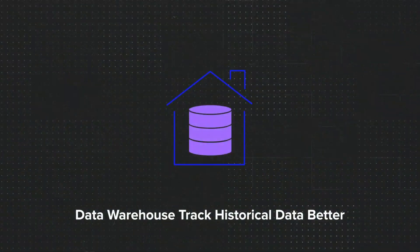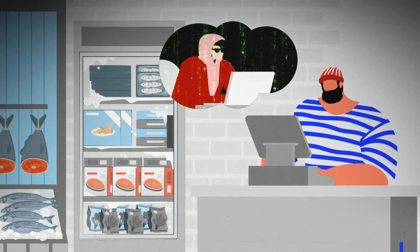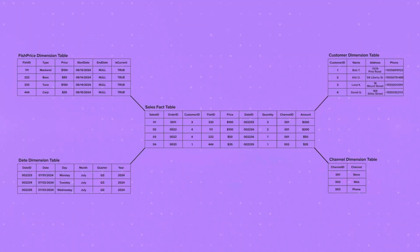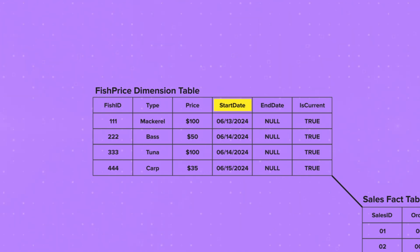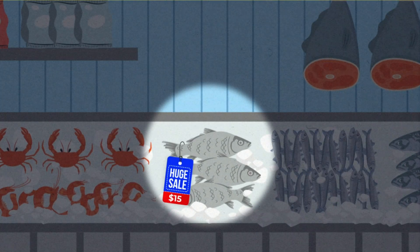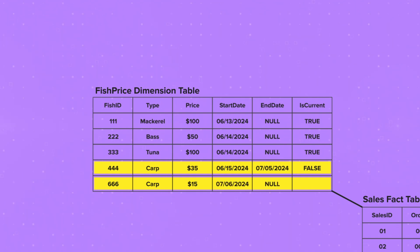What about tracking historical data? We can track price changes. In the fish dimension table, we record the start date when we assigned the price and the last date before we changed it, and we also note whether the price is current. So if carp goes on sale July 6th with a price drop from $35 to $15, just write the end date for the current carp price, create another row, assign a new fish ID, and record the start date with a new price.